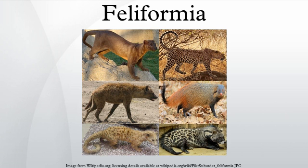Family Felidae are the best known of cat-like carnivorans. There are 41 extant species, and all but a few have retractile claws. This family is represented on all continents except Australia and Antarctica. The species vary in size from the tiny black-footed cat at only 2 kg to the tiger at 300 kg. Diet ranges from large to small mammals, birds and insects.